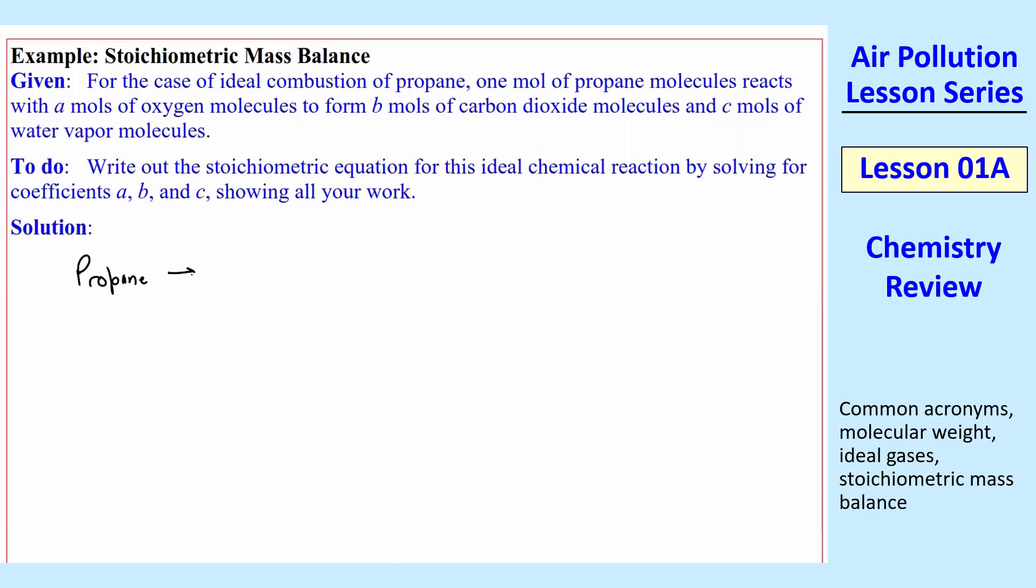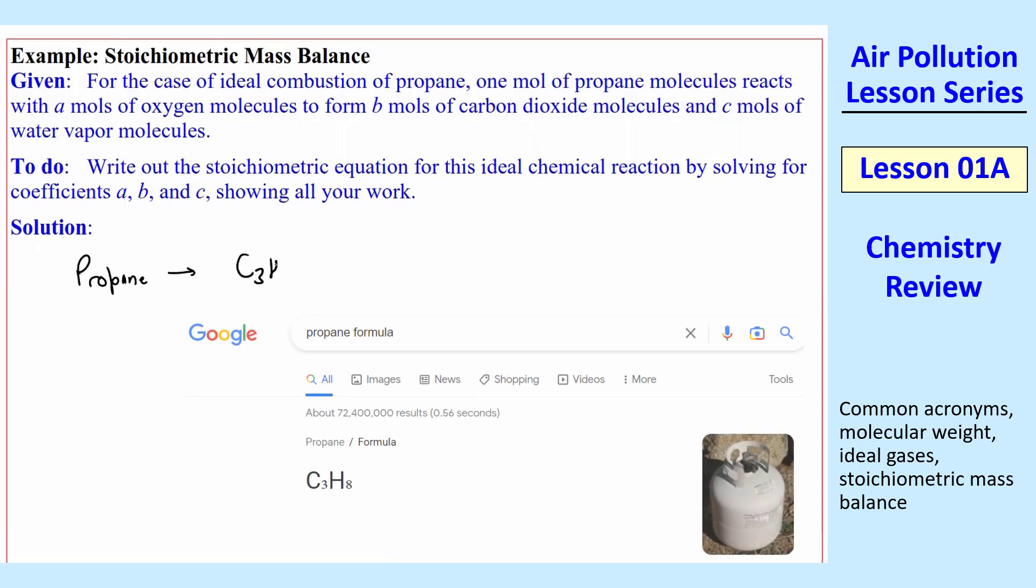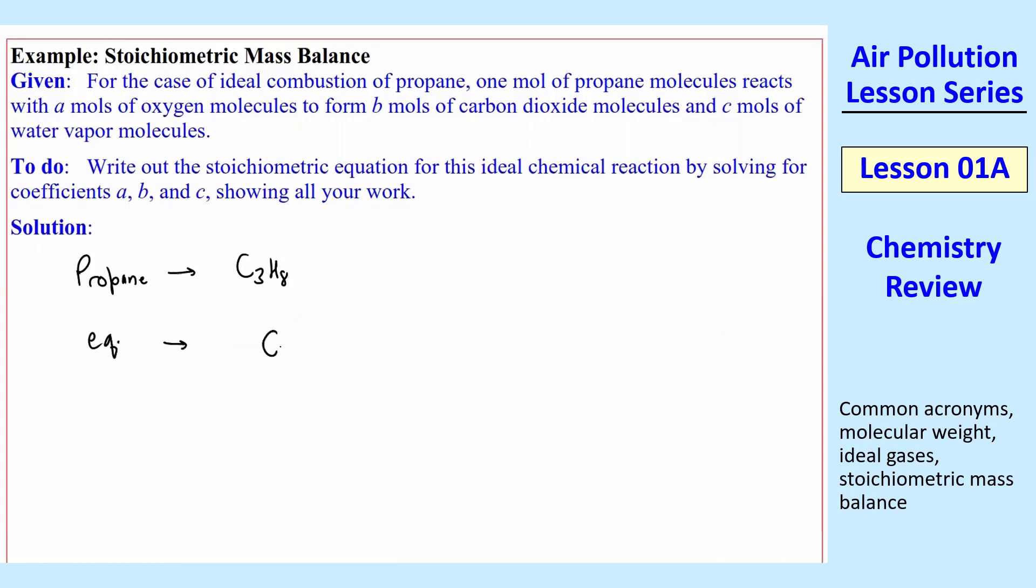So write out the stoichiometric equation and solve for coefficients A, B, and C. Showing all your work here. So first of all, I need to look up the chemical equation for propane. It's C3H8. And then the equation I would set up. So my propane, C3H8. So we're saying for one mole of propane, so that coefficient here is one, but I'm not going to typically put that there. Just leave it out because it's one.